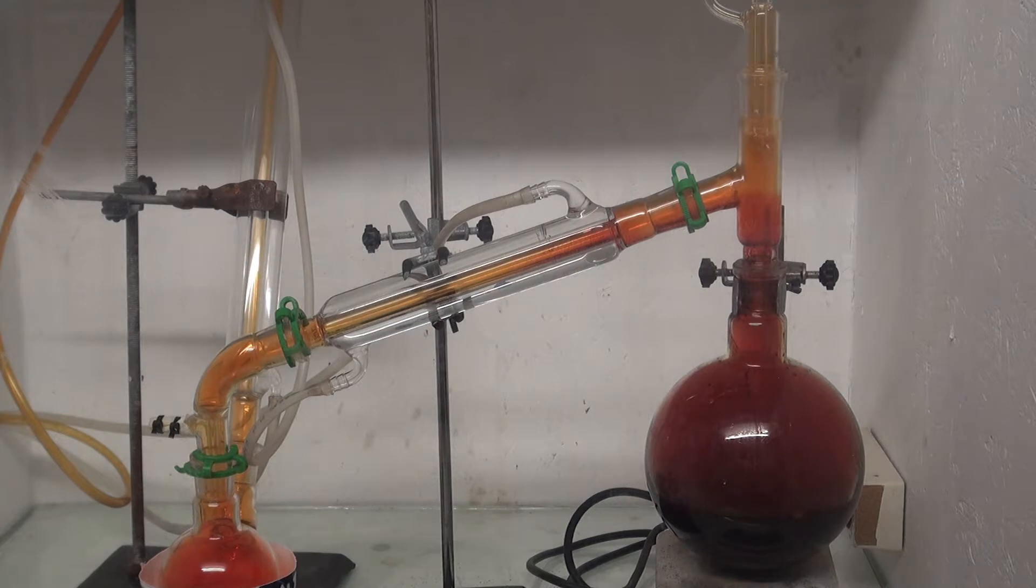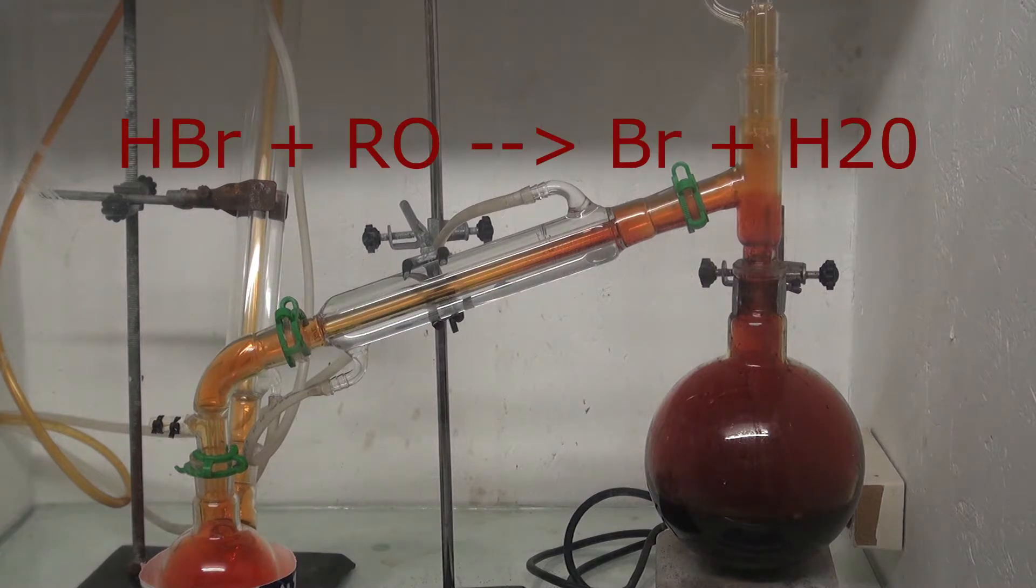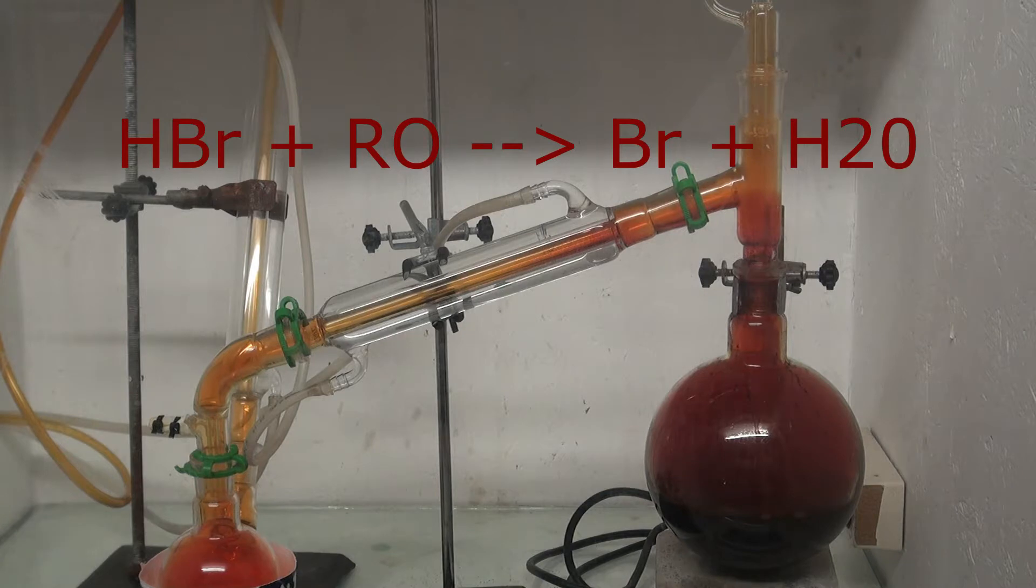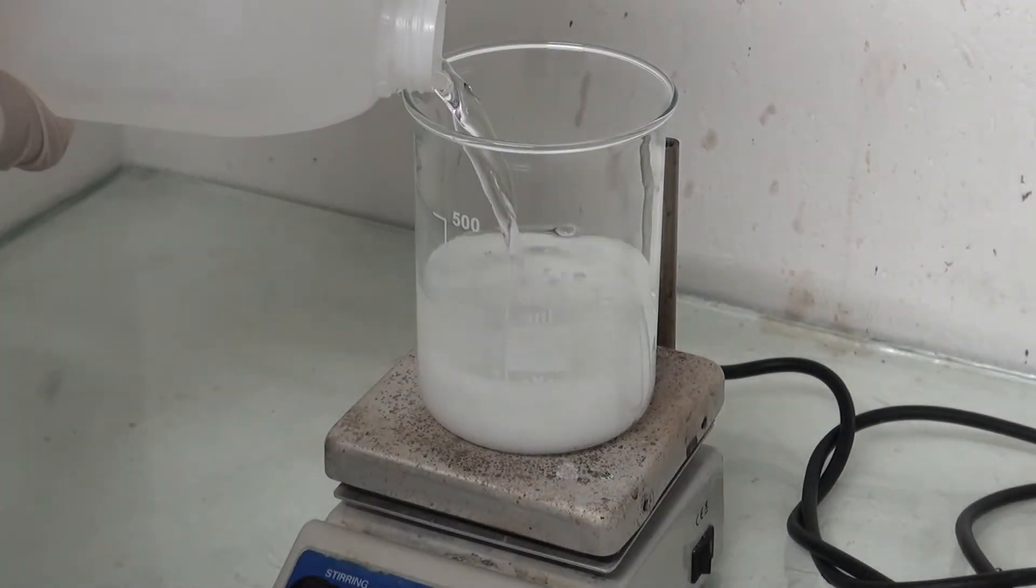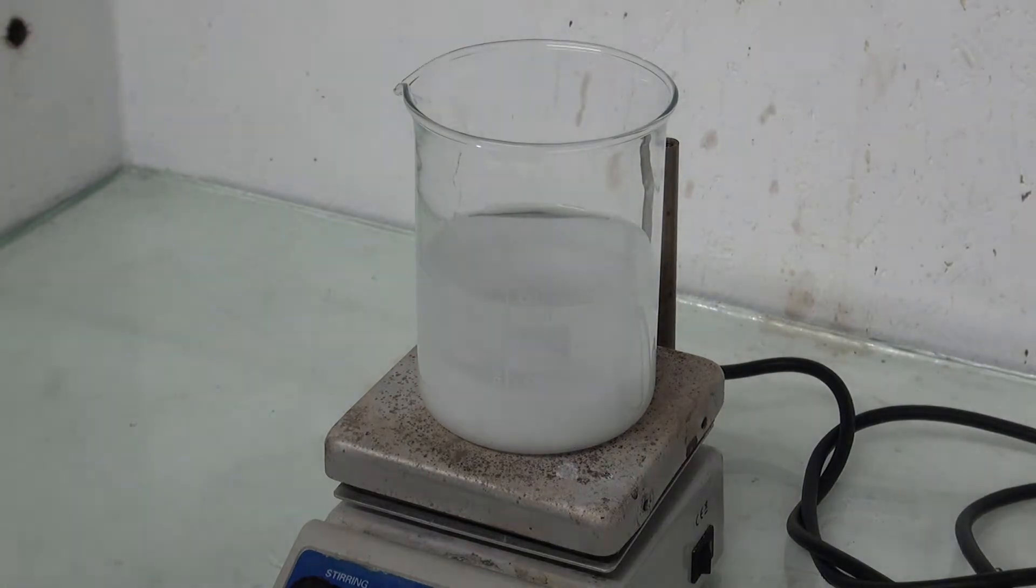In today's video I will make elemental bromine. Bromine can be prepared by the oxidation of hydrobromic acid. Hydrobromic acid can be made by reacting a bromide salt with a strong acid. For educational purposes, I dissolved 2 moles of sodium bromide in water.